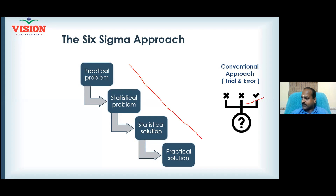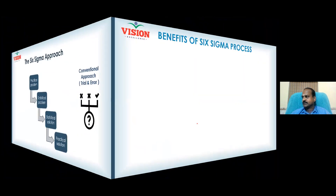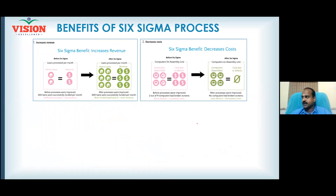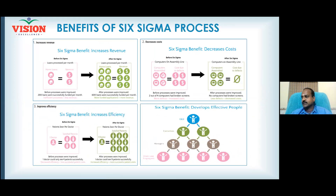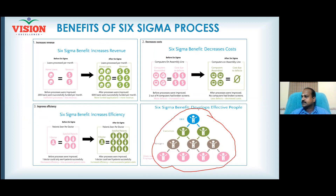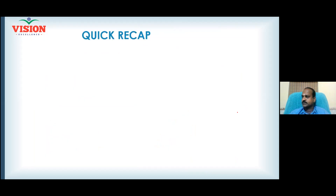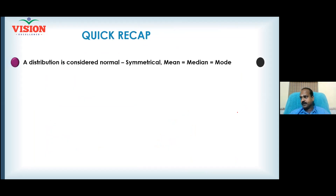If you follow other methods, solutions are rare but failures are frequent. In the Six Sigma methodology, success is sure and failure is rare. This approach can help any company improve revenue, reduce cost, and improve the efficiency of resources. People who follow and practice the methodology in their company will become very effective, and if people are effective, the organization also becomes effective.